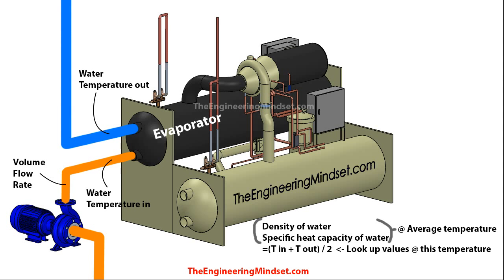There are a few things we need to know in order to perform this calculation. So let's imagine we've got our centrifugal chiller here, with the evaporator located over here and our pump. The return chilled water coming from around the building goes into the pump, which spins it around and pushes it through the evaporator where it cools down, and then leaves and goes off through the building.